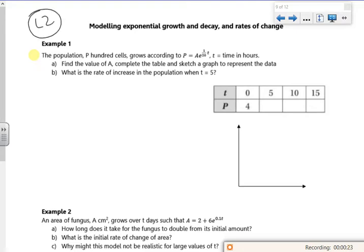So it says the population P, 100 cells, grows according to that exponential growth. Find the value of A. So it tells us from the table that initially P is 4. So if I use t is 0 and P is 4, so 4 is Ae to the power of 0, so 4 is A times e. So that tells me that my equation is 4e^(1/20t). And I've got a table there to fill in.